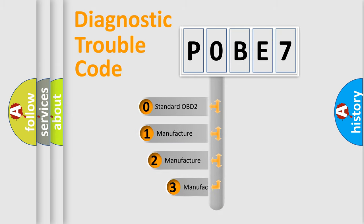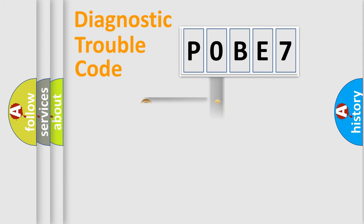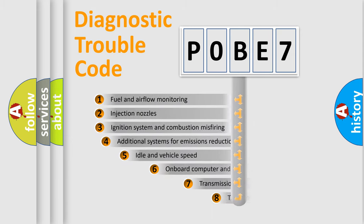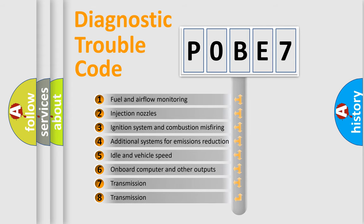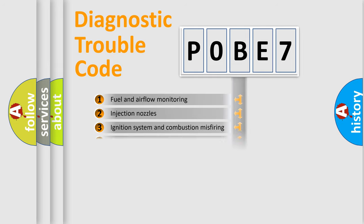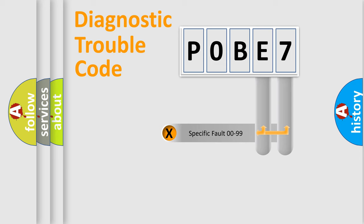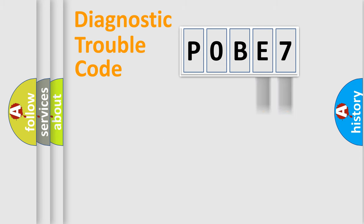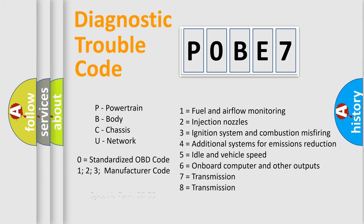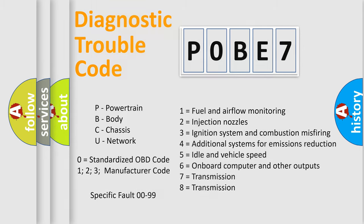If the second character is expressed as zero, it is a standardized error. In the case of numbers 1, 2, or 3, it is a more specific expression of a car-specific error. The third character specifies a subset of errors. This distribution is valid only for the standardized DTC code, and only the last two characters define the specific fault of the group. Such a division is valid only if the second character code is expressed by the number zero.